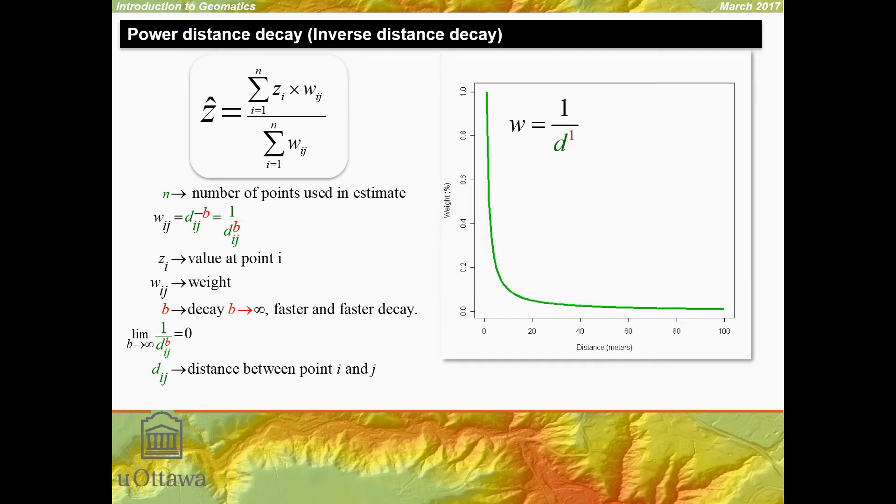The equation for inverse distance is in the form of a weighted mean, where we have the Z values times the weights divided by the sum of the weights, where Wij means the weight for location I and J. That weight is based on the distance, using this equation: 1 over D to the power of 1 in this case, which is inverse distance.